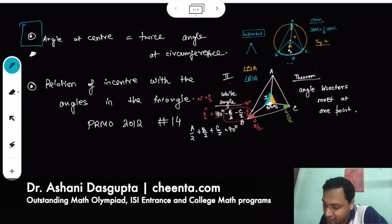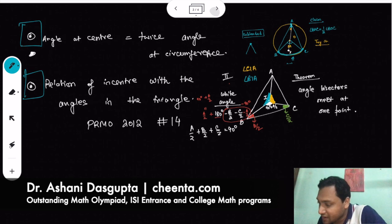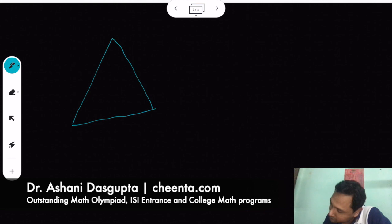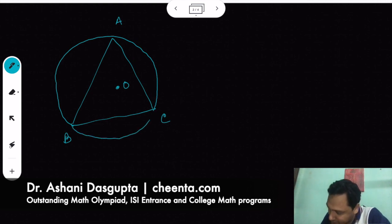Now, let's use these two concepts to solve a problem from PRMO so that we understand whether we are really understanding the concept or not. So the problem is like this: we have a triangle ABC and we have the circumcenter O of the triangle, which is basically the center of the circumcircle, like this.